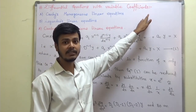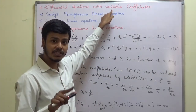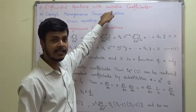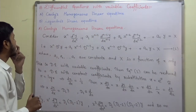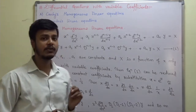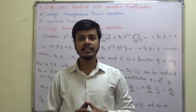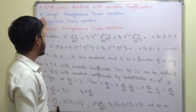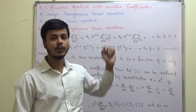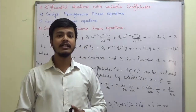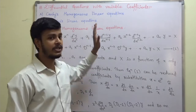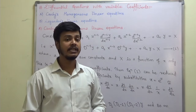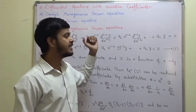Earlier we learned differential equations with constant coefficients, and now we are starting differential equations with variable coefficients. Whenever we talk about differential equations with variable coefficients, there are two types of equations: namely Cauchy's homogeneous linear equation and the second one is Legendre's linear equation. In this learning video, we are going to discuss Cauchy's homogeneous linear equation.